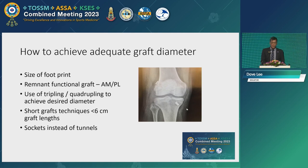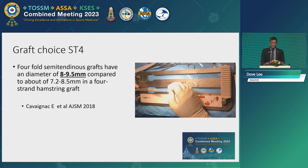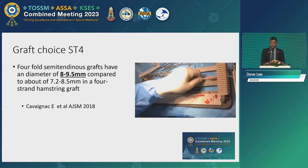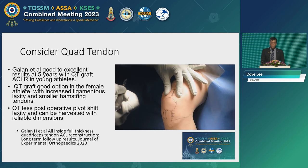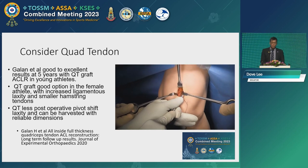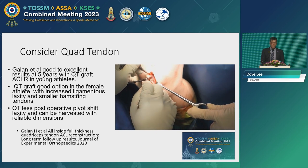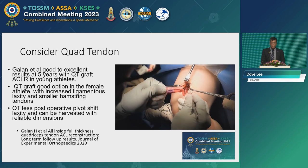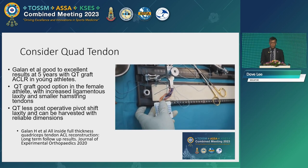How do you achieve adequate graft diameter? Look at the size of the footprint, try to preserve as much remnant, and use tripling or quadrupling techniques to achieve the desired diameter. Short grafts less than 6mm will require quadrupling and the use of sockets instead of full tunnels — an all-inside reconstruction. A folded semi-T would give you a graft size of even in an Asian patient 8 to 9.5mm as a four-strand construct. Consider the use of quadriceps tendon increasingly, especially in North America — it has been shown to be as good as hamstrings and perhaps as good as bone-patellar tendon-bone with time. The use of quad as a soft tissue graft will require preparation using specialized devices and specialized buttons.